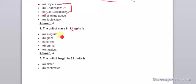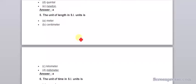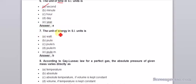Unit of mass in SI unit is kilogram. The unit of length in SI unit is meter. The unit of time in SI unit is second. The unit of energy in SI unit is Joule.